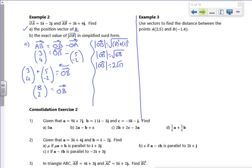Let's have a look at example 3 then, and then we're done. So use vectors to find the distance between the points A(2,5) and B(-1,4). So if you imagine, there's A, and there's B. That's the vector AB. So AB, along that distance, would be OB minus OA, second minus first.